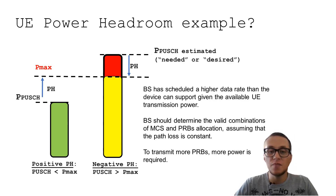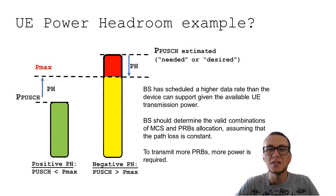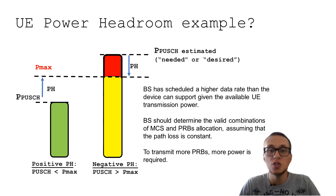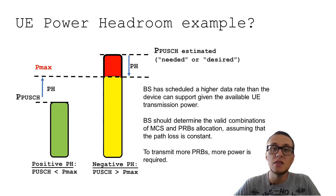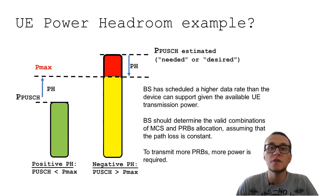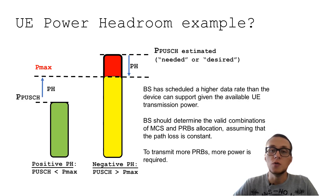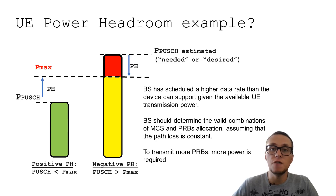In the case of negative power headroom reporting, it means that the PUSCH estimated power — the desired or hypothetical power of PUSCH — exceeds the maximum output power of the user equipment. In this case, the base station will very likely give commands to reduce modulation and coding scheme, reduce some radio management features, and so on. We will talk about this later.